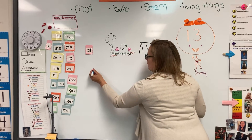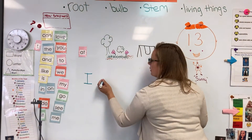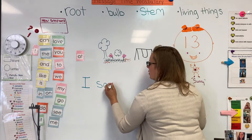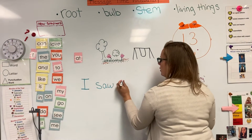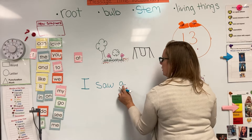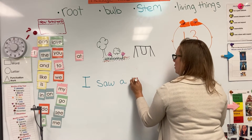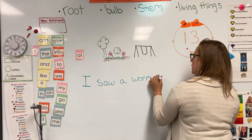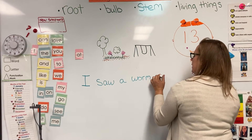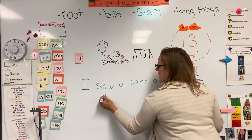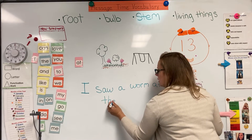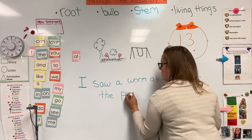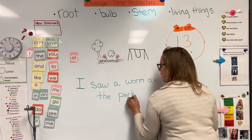I'm going to start with a capital I. S, A, W — I saw. A worm: W, O, R, M — worm. A, T — at. T, H, E — the. P, A, R, K — park.